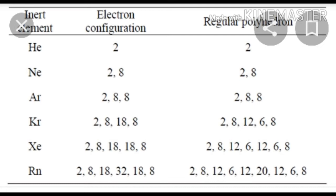Helium consists of two electrons — both present in the first shell itself. Whereas neon is two, eight, meaning the first shell has two electrons and the second shell has eight electrons. All the inert gases contain eight electrons in the last shell. That is the reason why these inert gases do not react with any other atom.